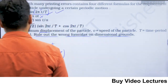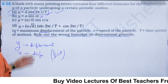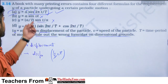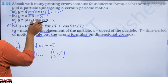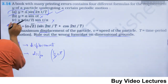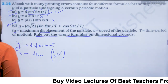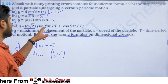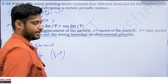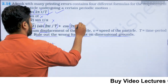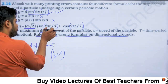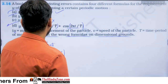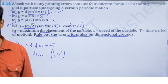For the fourth formula, y = (a/√2)[sin(2πt/T) + cos(2πt/T)]: a divided by √2 still has the dimension of displacement. The argument of sin is 2πt/T — time divided by time — which is dimensionless. Cos argument is also dimensionless. So sin and cos each give a number, multiplied by displacement — this formula is dimensionally correct.